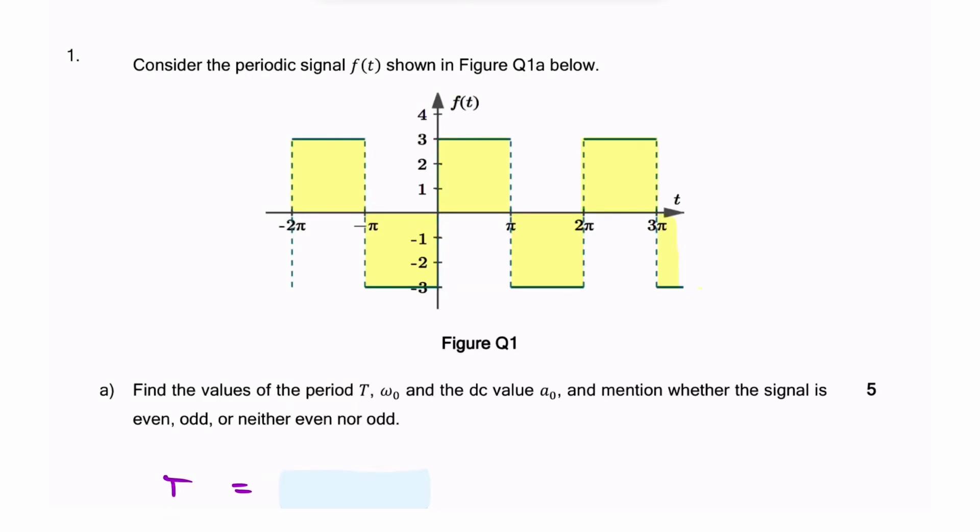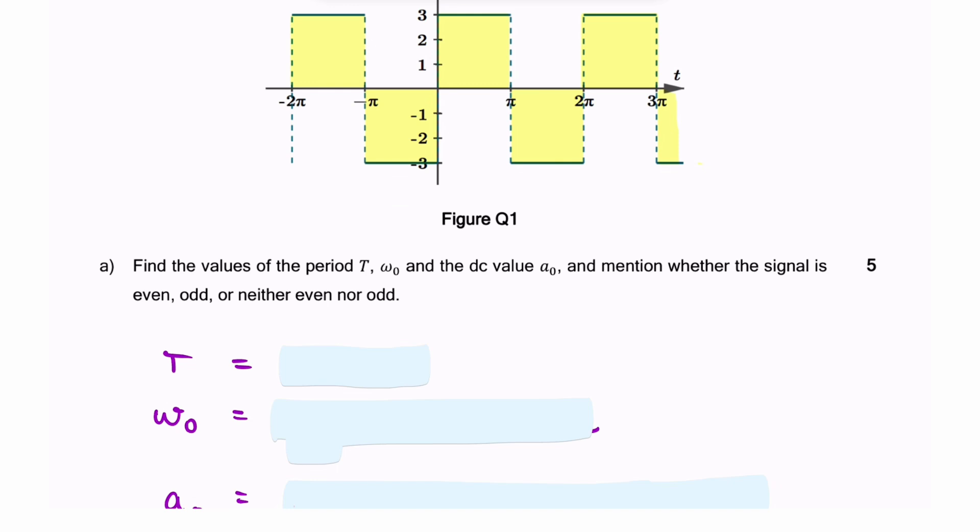Here we have an examination-style question where we're given a periodic function of time, in this case a square wave, and we're asked to find the values of the period, the fundamental frequency, and A₀, the DC value, and to comment on whether the signal is even, odd, or neither even nor odd.